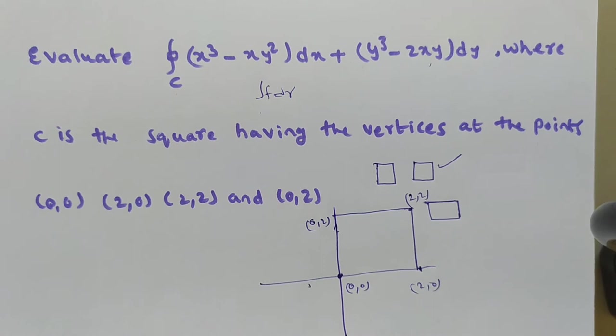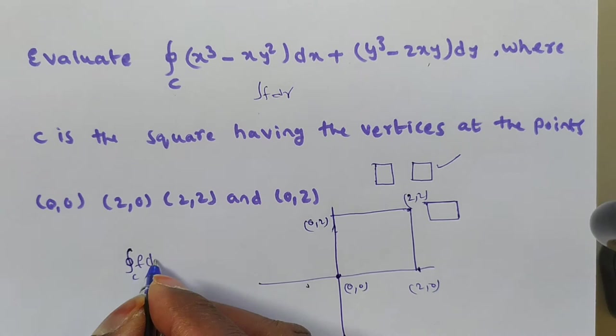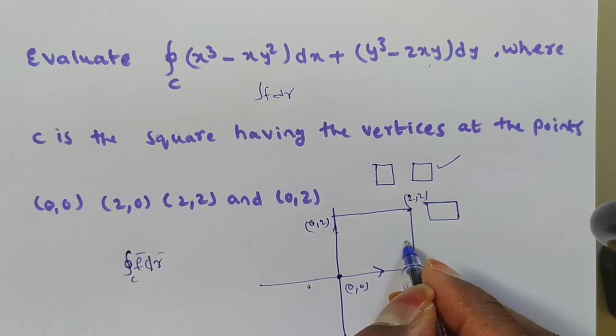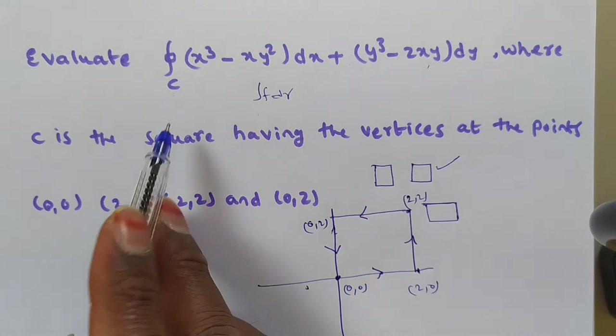Friends, you have to remember: if you want to evaluate the circulation — that is ∮F·dr — along a closed curve, then the curve should be traversed in the anti-clockwise direction. We are doing this as a line integral.